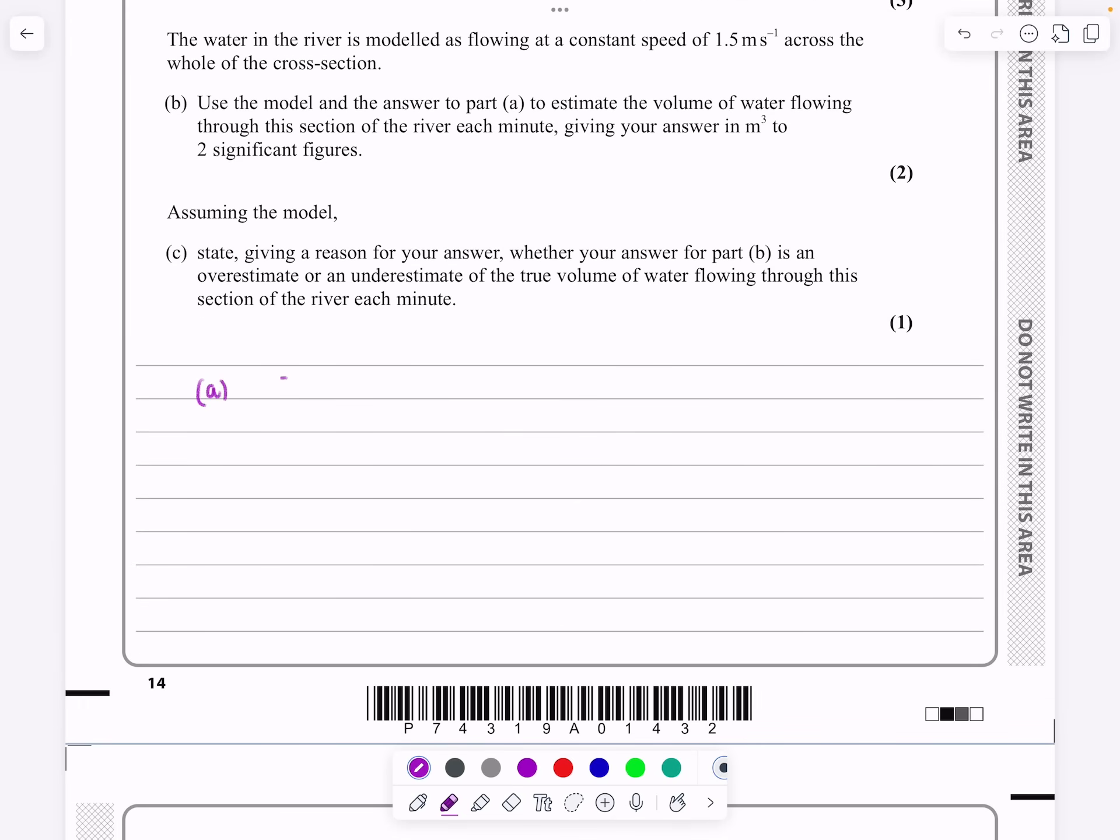The estimate area, or estimated area, is going to be equal to d over 2, and then it's y0 plus y5, and it's two lots of everything else, y1 plus y2 plus y3 plus y4. So if we do that, d is equal to 3, so it's 3 over 2.